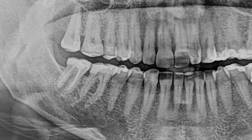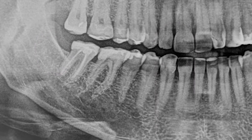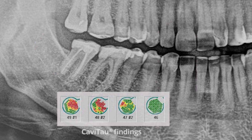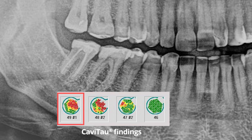A bone density measurement with the Cavital device clarifies the question of an inflammatory process worthy of surgery that triggers neuralgia in 4-8. The Cavital result at the bottom of the picture shows healthy tooth 4-6 in green for healthy alveolar bone. In contrast, areas at 4-7, 4-8, and 4-9 in red showed reduced bone density with suspected fatty degenerative osteolysis in the jaw bone — FDOJ.